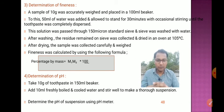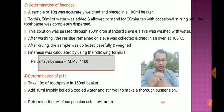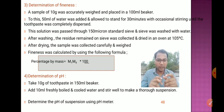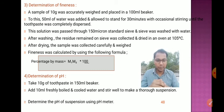Another evaluation test is determination of pH. Take 10 grams of toothpaste in a 150 ml beaker, add 10 ml of freshly boiled and cooled water, and stir well to make a thorough suspension. Determine the pH of the suspension using a pH meter.